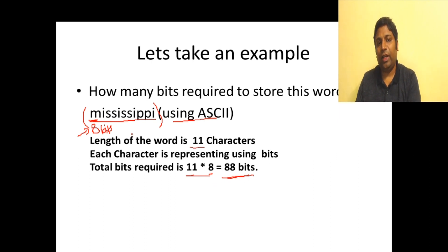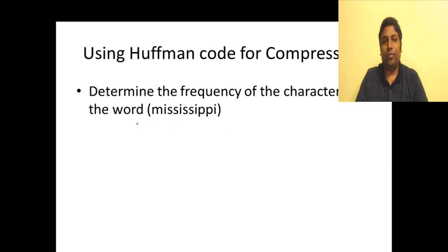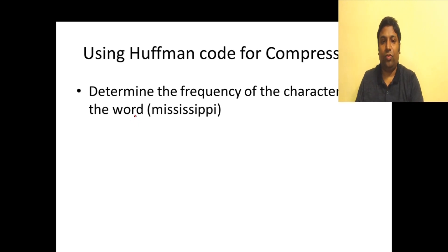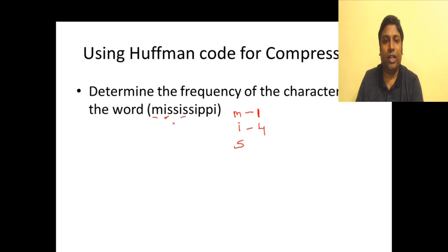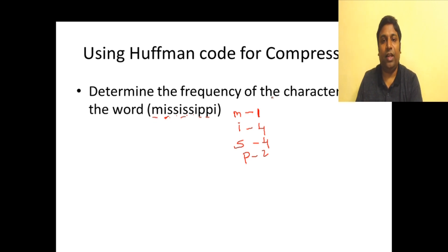Let us apply the Huffman encoding algorithm on this string and see how many bits get reduced by compression. The very first step in Huffman coding is we have to find the frequency of the characters in that string. We take 'm' — it occurs just one time. 'i' occurs four times. 's' occurs four times. And 'p' occurs two times.